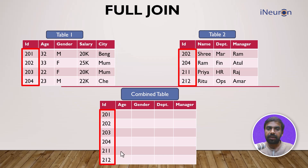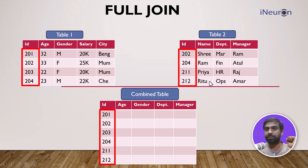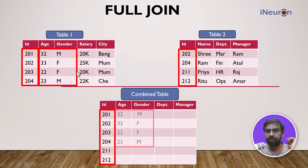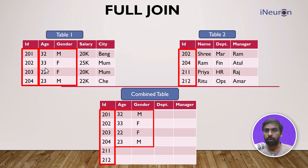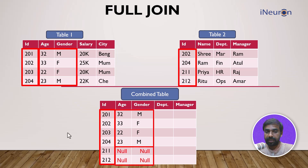Once full join runs, SQL determines rows for all six ids. There are four rows in each table, but the union generates six rows — compared to only two rows from inner join. For ids 201, 202, 203, 204, age and gender data is present so it comes through. But 211 and 212 are not in table one, so their age and gender are not known. Full join still includes 211 and 212 in the combined table.